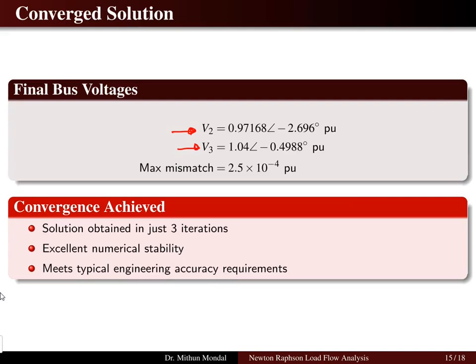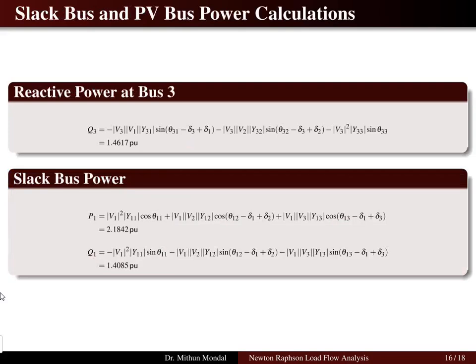The solution converges after the third iteration because the voltages are no longer changing. V2 and V3 — the final bus voltages — show a maximum mismatch of 2.5 × 10⁻⁴, which is a very small number. Convergence is achieved in three iterations with excellent numerical stability, and this accuracy meets typical engineering requirements.